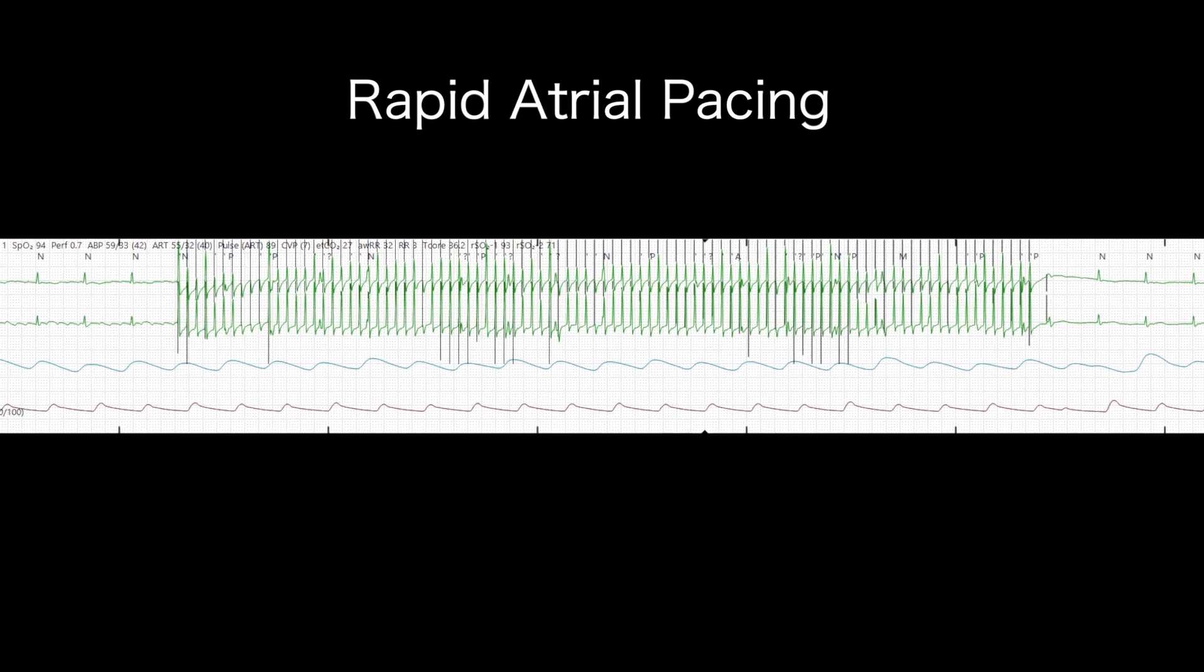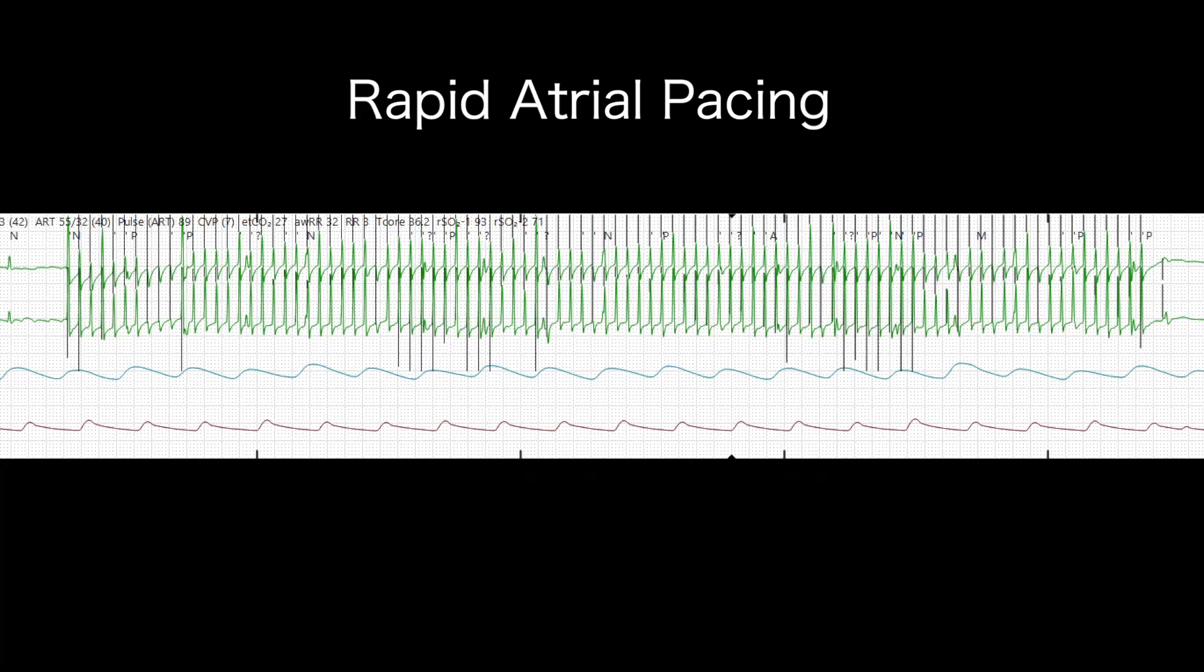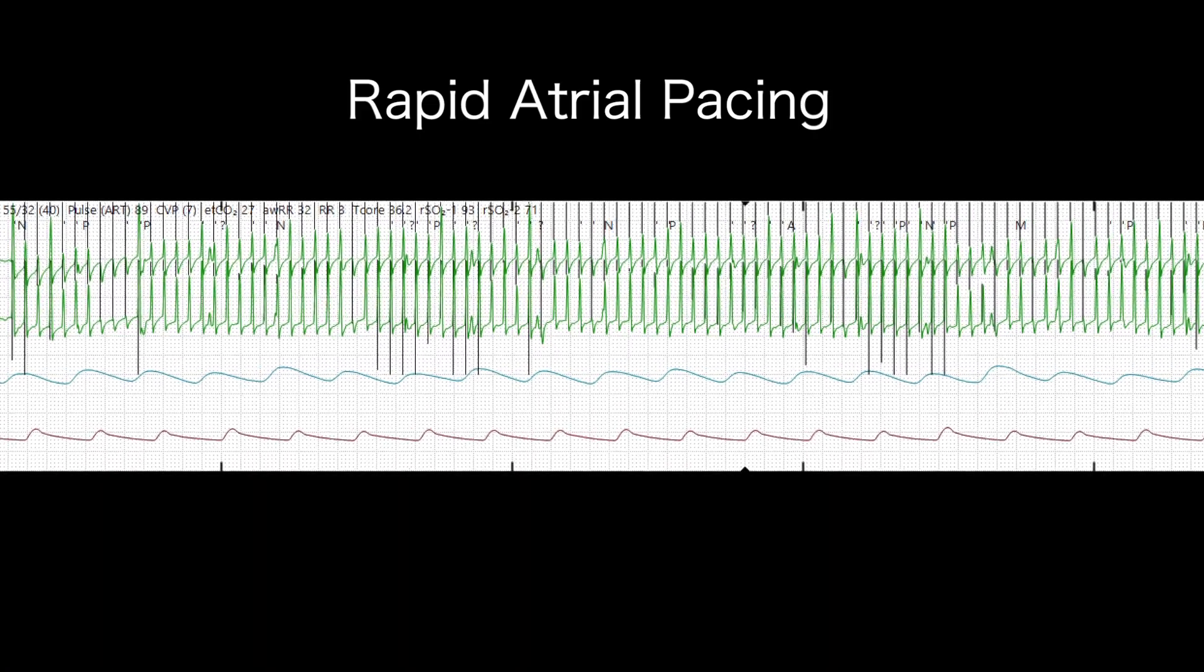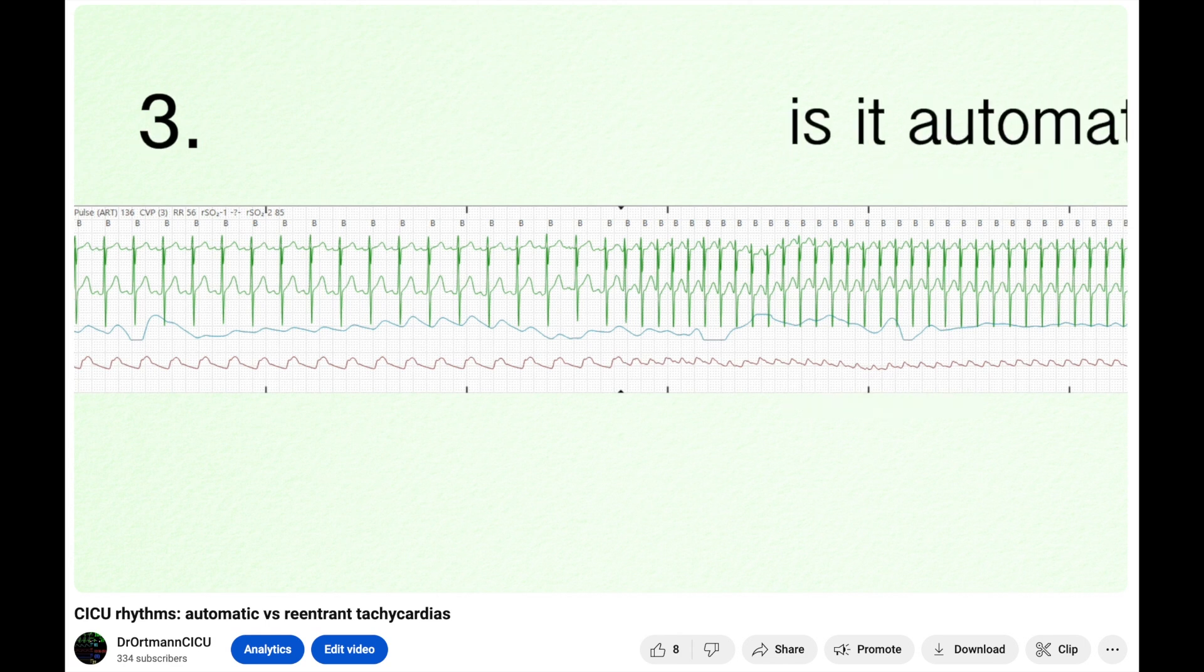Rapid atrial pacing is a way to quickly end a re-entrant tachyarrhythmia if you have temporary atrial pacing wires. I've talked about the difference between re-entrant and automatic arrhythmias in another video, so go back and watch that if you need to.